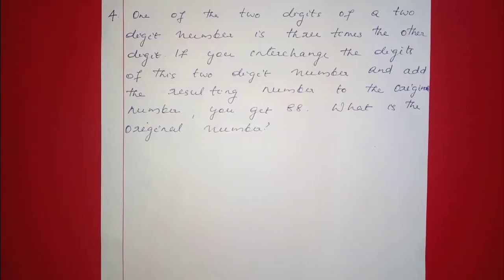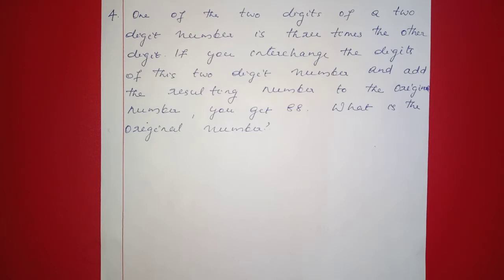Next question: one of the two digits of a two-digit number is three times the other digit. If you interchange the digits of this two-digit number and add the resulting number to the original number, you get 88. What is the original number?